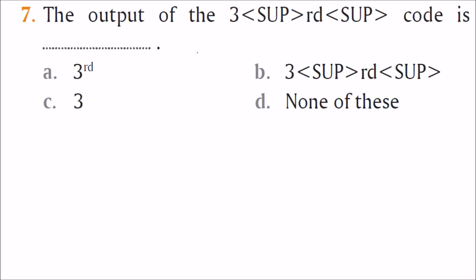What is the output of the tag: three superscript rd? SUP means superscript, so 'rd' will appear as a superscript to 'three', giving us '3rd'. The answer is A.